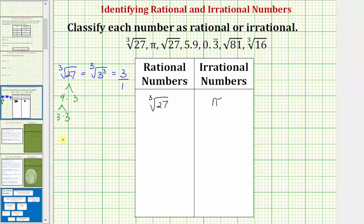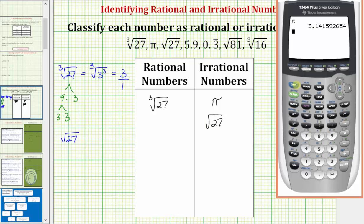Next we have the square root of 27. There's no whole number times itself that's going to be equal to 27. We know five squared is equal to 25, and six squared is equal to 36, which means this is not going to simplify perfectly. It's going to be some non-terminating, non-repeating decimal between five and six, which means the square root of 27 is irrational. Looking at this on the calculator, if we enter the square root of 27, notice how it is between five and six, but this decimal is non-terminating and also not repeating, which is why the square root of 27 is irrational.